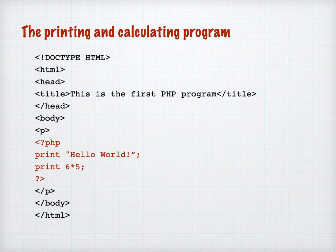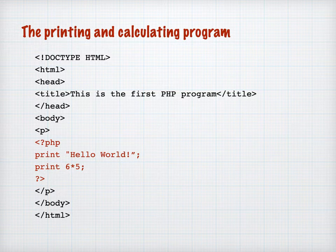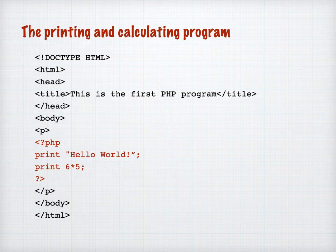PHP enables us to do dynamic processing, so we can actually calculate values, find values, or do all sorts of actions. Changing that program slightly, we could put a second print statement in and say print six times five, and what will happen is that will be calculated and the result will be printed out after hello world. Note how I've put two lines here, laid down the page, with a semicolon at the end of each line. What the semicolon is doing is separating the statements.